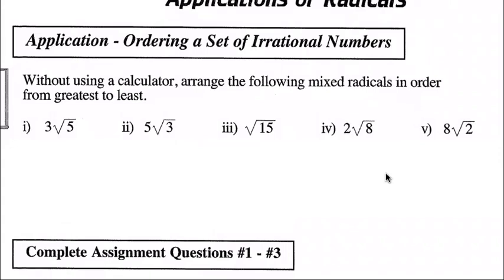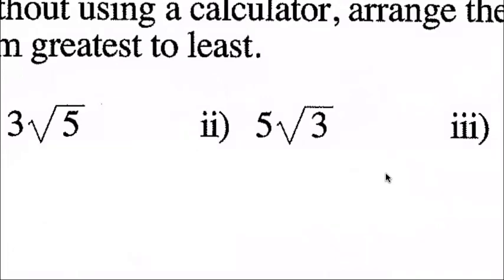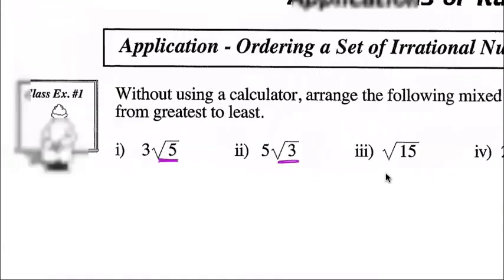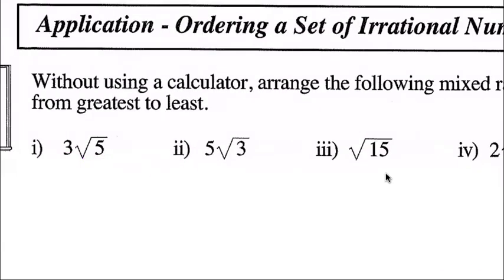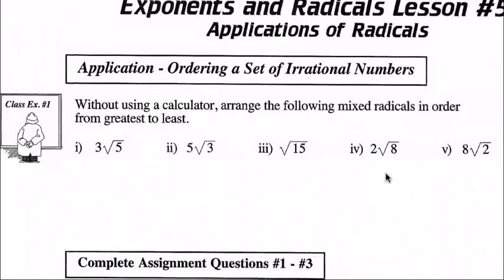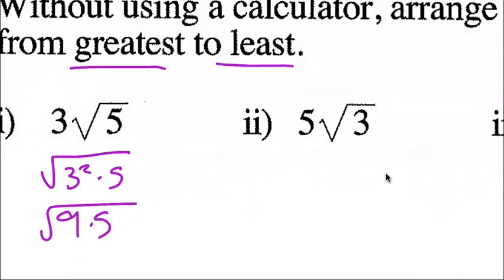All of these numbers are irrational because they're square roots of non-perfect squares. In order to compare them, we need to make them all look the same. We can compare if they all have the same root and radicand. They're all square roots, so what I want to do is make them all into entire radicals. So I'll convert them all to entire radicals first. Three square root five equals the square root of three squared times five, which is the square root of nine times five, or the square root of 45.